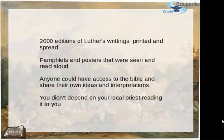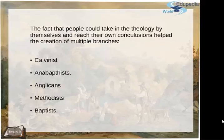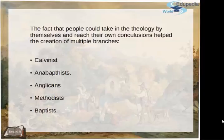You no longer depended on your local priest reading the Bible to you and explaining the meaning of the text — you could read and think about it yourself. The fact that people could engage with theology independently and reach their own conclusions also helped create multiple branches. From the Protestant Reformation you got charismatic people who built their own branches: Calvinists, Anabaptists, Anglicans, Methodists, Baptists — they all come from this moment. This is the core that enabled all these branches of Protestantism to come to light.